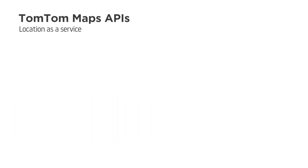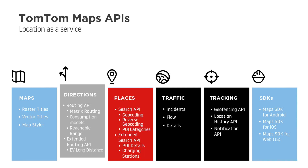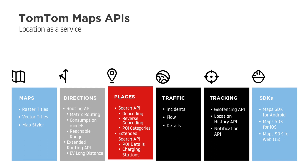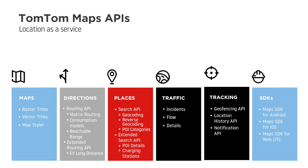TomTom offers developers six different product families to make location-based applications. Here is a summary of them: Maps, Directions, Places, Traffic, Tracking, and SDKs for web and mobile. Let's take a look.